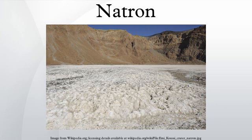Etymology: The English word natron is a French cognate derived from the Spanish natron, through Greek nitron. This derives from the ancient Egyptian word natron. Natron refers to Wadi al-Natron, or Natron Valley in Egypt, from which natron was mined by the ancient Egyptians for use in burial rites. The modern chemical symbol for sodium, Na, is an abbreviation of that element's New Latin name natrium, which was derived from natron.